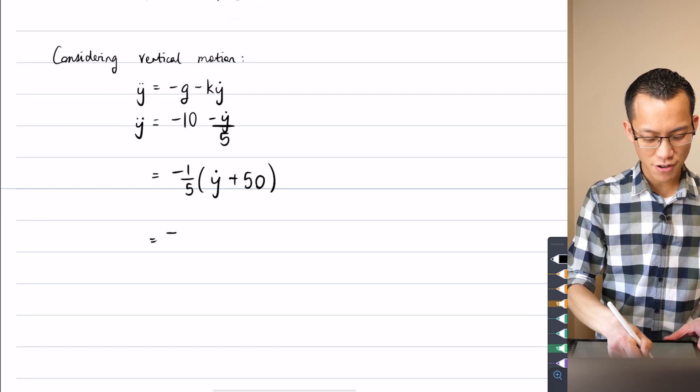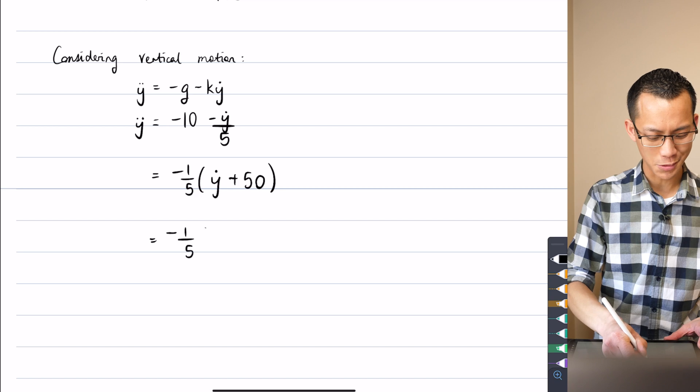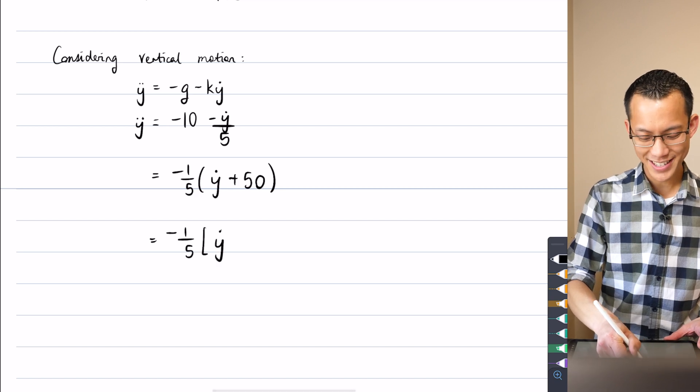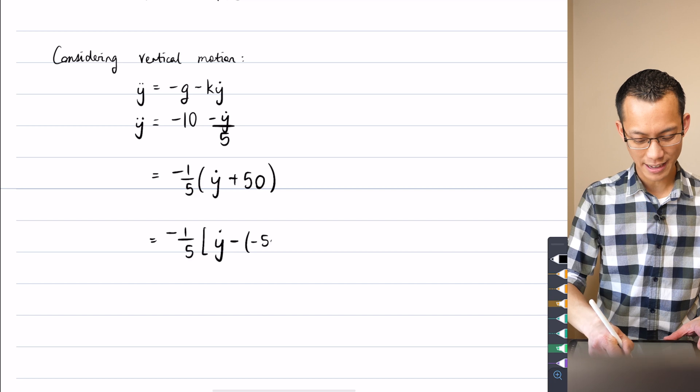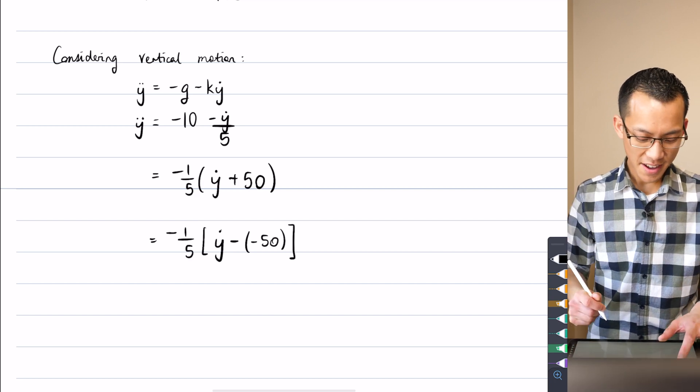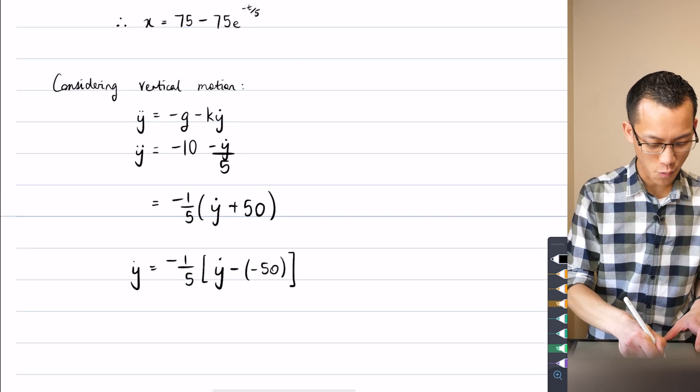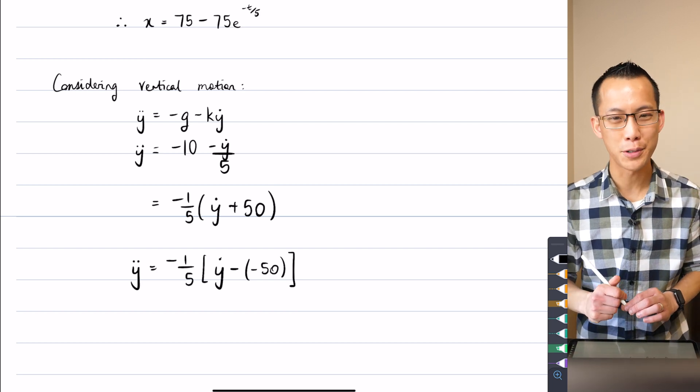And just as one final step, which I know may look a little like, why are you doing this, Mr. Wu? I'm going to write this as a difference rather than as a sum. So I'm going to write it like so. Okay. So this is my equation for y double dot for the vertical acceleration.